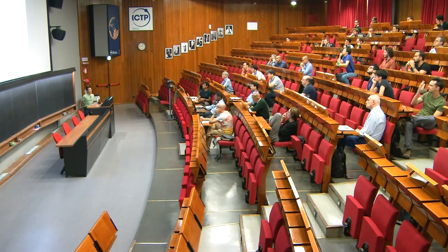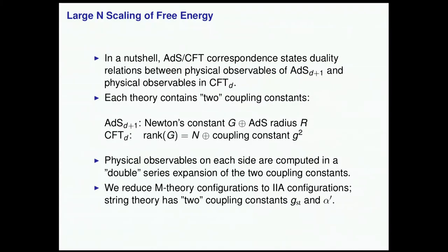Let's just recall what ADS-CFT is after so many years. In a nutshell, ADS-CFT correspondence states a duality relation between physical observables computed in some ADS-(D+1)-dimensional gravity and the conformal field theory in D dimensions, which shares the same kinematics and spacetime symmetries. Each theory contains two coupling constants — that's a very important caveat for ADS-CFT to work. In ADS-(D+1), we have Newton's constant and the ADS radius scale, which sets the characteristic momentum or angular momentum.